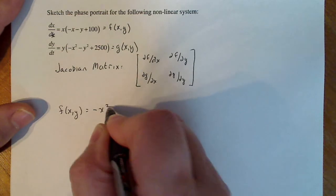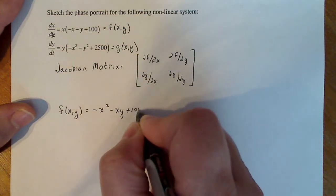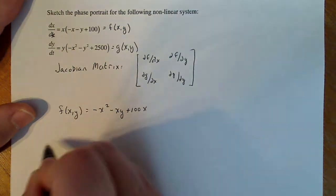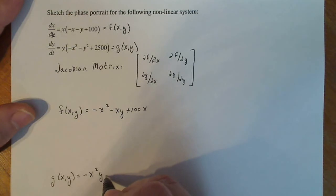And then G of X, Y, give myself some space here, is equal to minus X squared Y minus Y cubed plus 2,500Y.